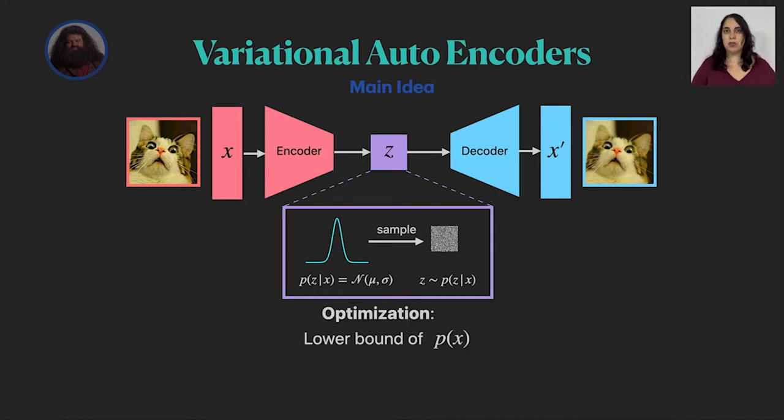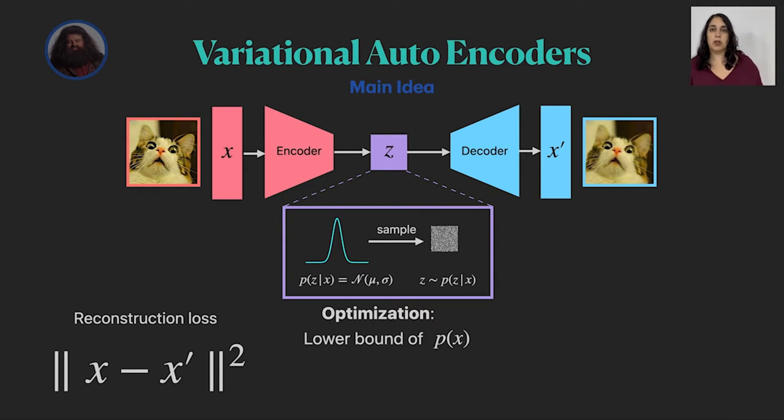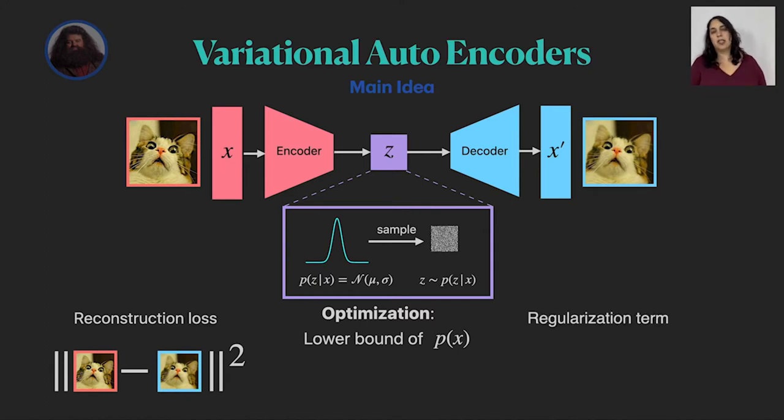This is being optimized with a lower bound on the probability of X that we wanted to optimize. This allows us to write the objective as two terms, a reconstruction loss. We basically want our decoded image to be as similar as possible to the input image, just like with other autoencoders. And the second term is a regularization term. We want our latent space to be as close as possible to be normally distributed, meaning having a mean of zero and standard deviation of one.